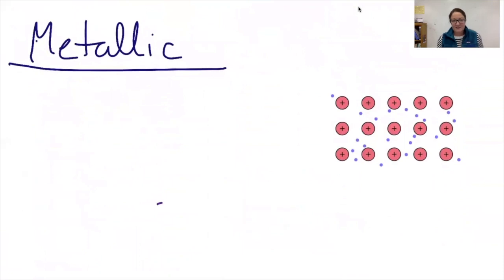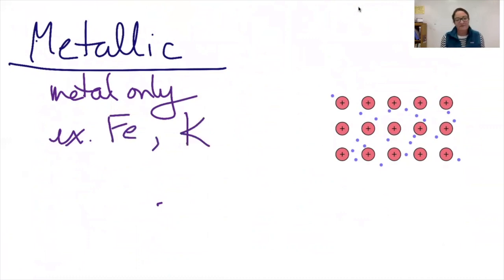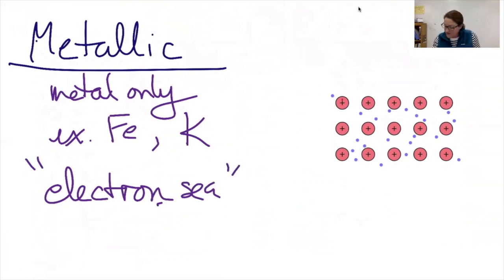The last category is a metallic solid. Metallic solids are the easiest to identify because it's a metal only and just one of them. So for example, iron is a pretty classic example of a metal, but it could also include something like potassium. Metals are generally modeled with what's known as the electron sea model. It's positive charges that are in a fixed location and then electrons that are free to move and don't belong to any one atom. And that idea that electrons are free to move is what gives rise to the ability to conduct electricity.